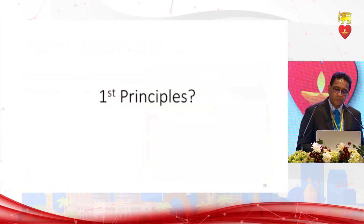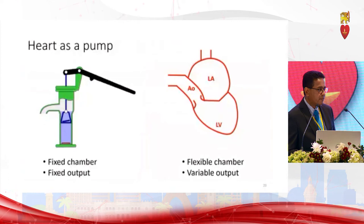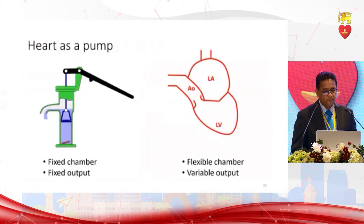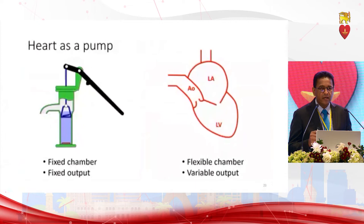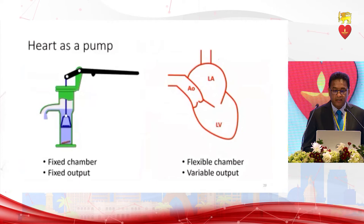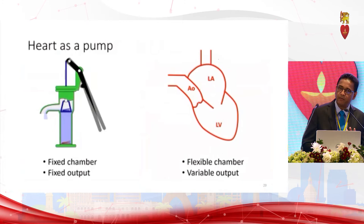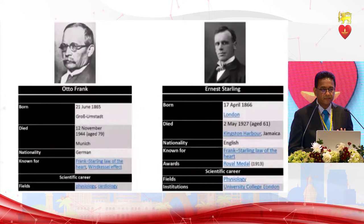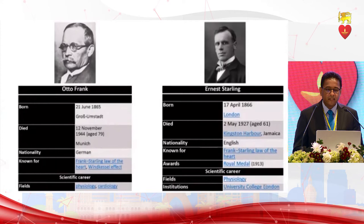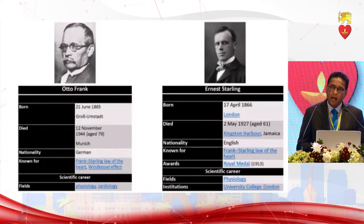Both a hand pump and the left ventricle are pumps, but the hand pump has a fixed chamber with fixed output — the only way to change output is to change the rate. The left ventricle is a flexible chamber with variable output. This was observed by Otto Frank and Ernest Starling — the Frank-Starling law — about 100 years ago.